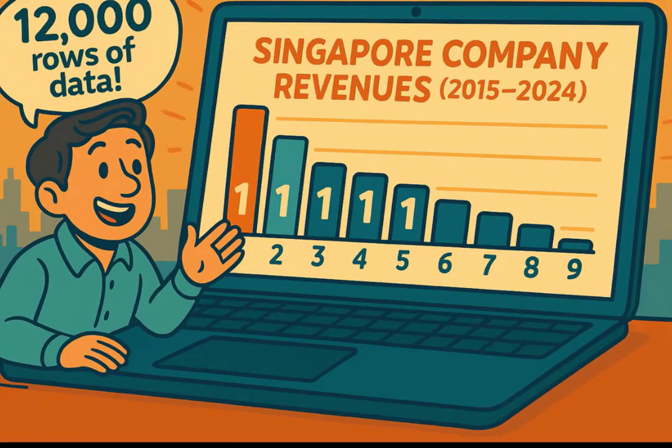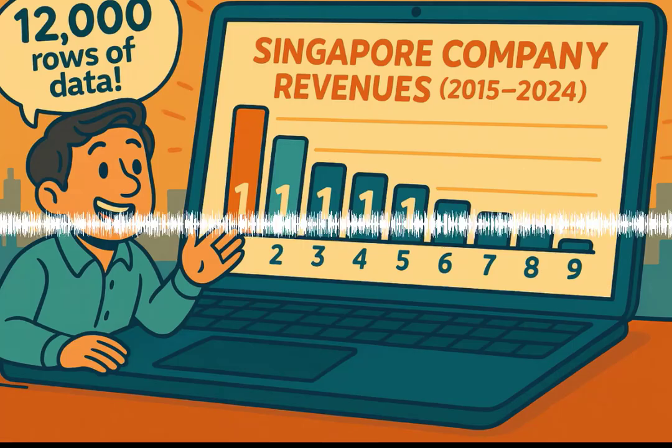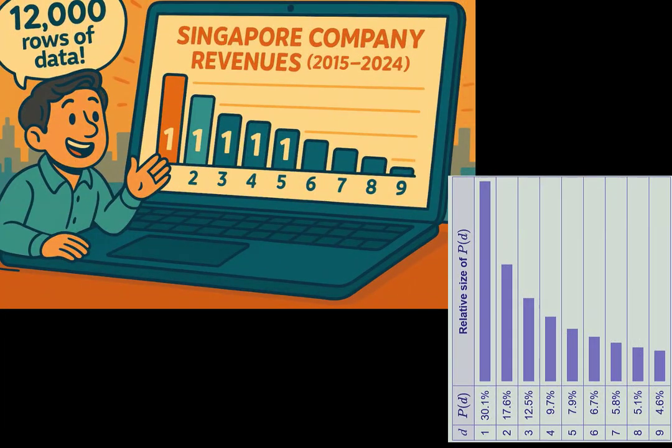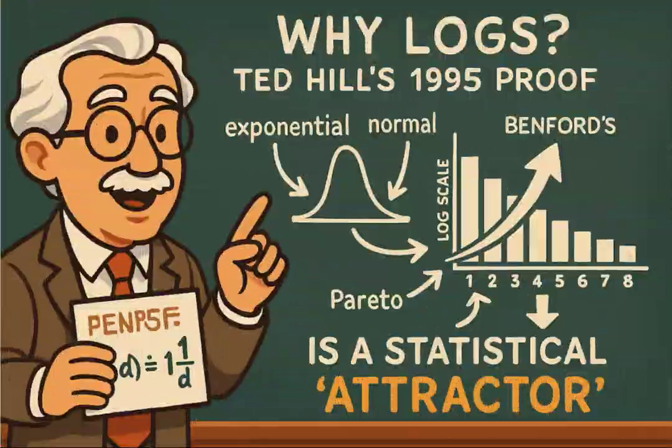Let's test it. The last decade of Singapore company revenues — 12,000 rows. Watch the bar chart bloom. Digit 1 hovers near 30%.